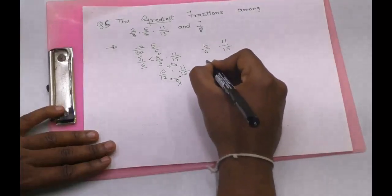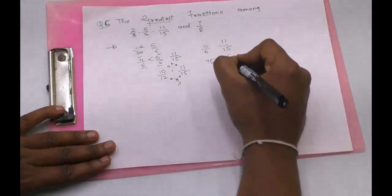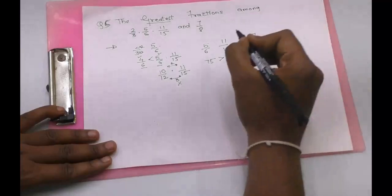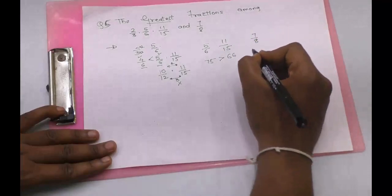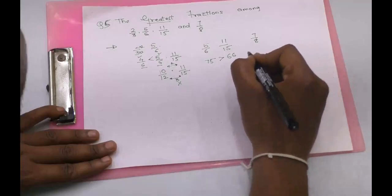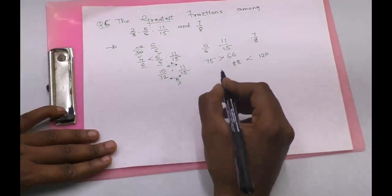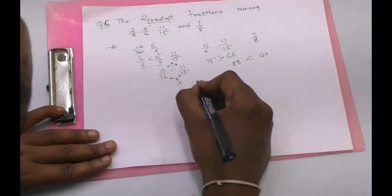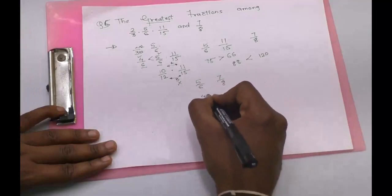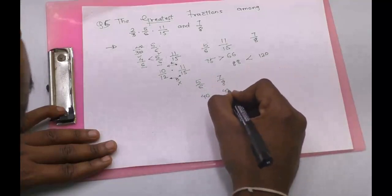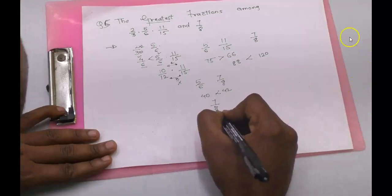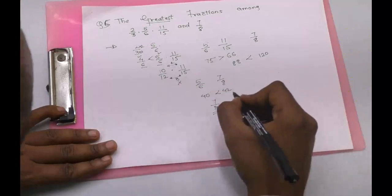We do cross multiplication for 5 by 6 and 11 by 15: 15 into 5 is 75, and 6 into 11 is 66. So 5 by 6 is bigger. For 11 by 15 and 7 by 8: 8 into 11 is 88, and 15 into 7 is 105 — so 7 by 8 is bigger. We still lack a direct relation between 5 by 6 and 7 by 8: 5 into 8 is 40, and 6 into 7 is 42. Since 42 is bigger than 40, we can directly say that 7 by 8 is the greatest fraction.